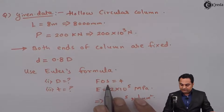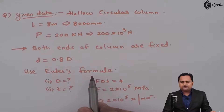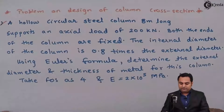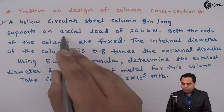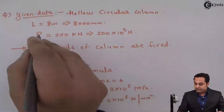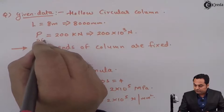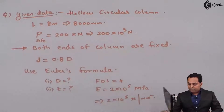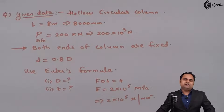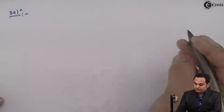Since factor of safety is given and we have to use Euler's formula, we require Euler's load. The axial load of 200 kilonewton given in the problem is the safe load. We will use this safe load and FOS to get Euler's load. Now let us try to get the solution. First I'll draw the cross-section.